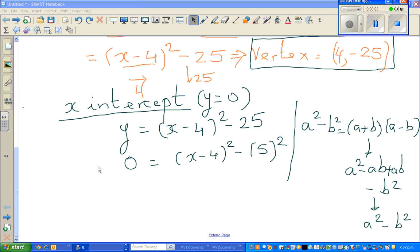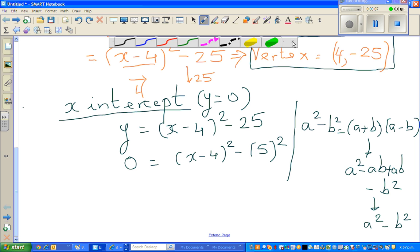Welcome back. This is where we stopped in our last video, where we said 0 equals x minus 4 squared minus 5 squared. We saw this formula, and the reason that this becomes this is you can cancel the negative ab and plus ab. What remains is a squared minus b squared.